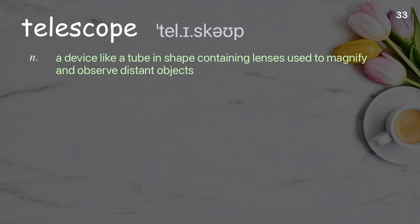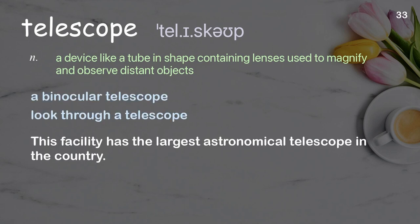Telescope: a device like a tube in shape containing lenses used to magnify and observe distant objects. Examples: a binocular telescope, look through a telescope. This facility has the largest astronomical telescope in the country.